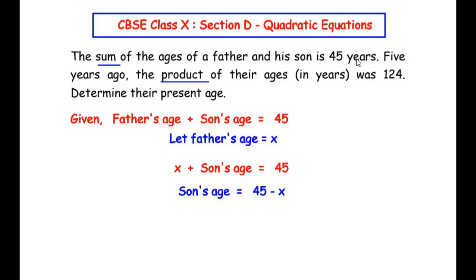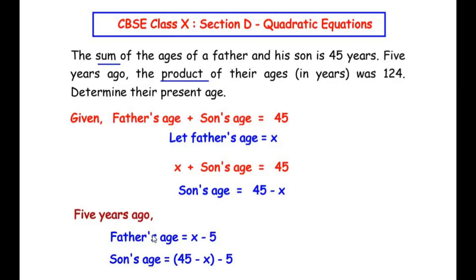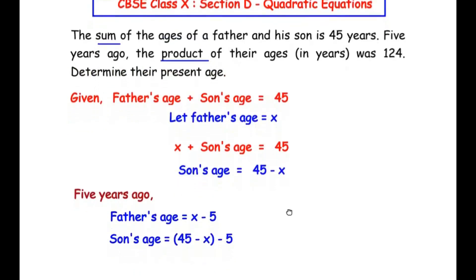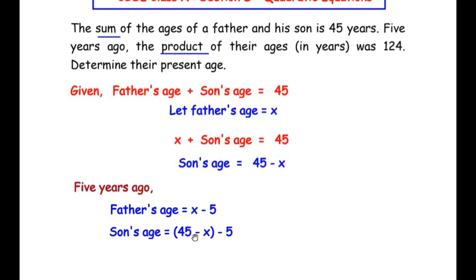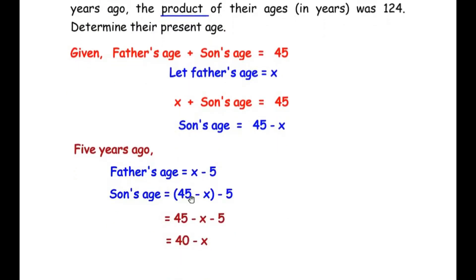Now let us focus on the second statement: five years ago, the product of their ages was 124. Since we are talking about the past, the father's age five years ago is x minus 5. Similarly, the son's age five years ago is 45 minus x minus 5. Opening the brackets, 45 minus 5 gives us 40, so the son's age five years ago is 40 minus x.